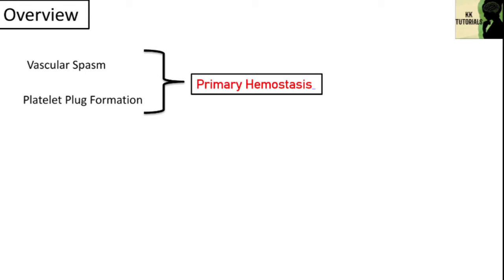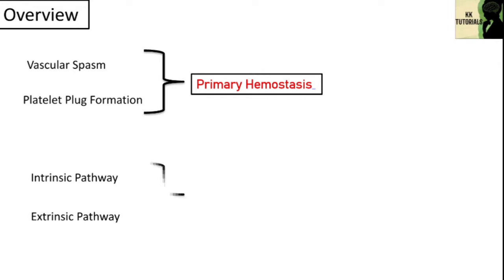Platelets alone are not enough to secure the damage in the vessel wall. We need a clot to prevent excessive blood loss at the site of injury. This clotting cascade occurs through two separate pathways that interact — intrinsic pathway and extrinsic pathway — and these processes are often considered as part of secondary hemostasis.